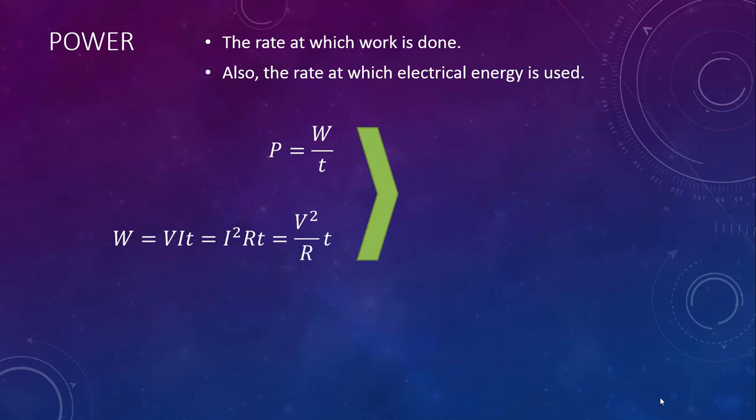This is going to look silly, but we could take that entire series of equations for w and plug it in to the equation above. This gives us p equals vit equals i squared rt equals v squared over rt all over t. You may have noticed that each term on the right has a t and we're dividing by t. This really simplifies things.